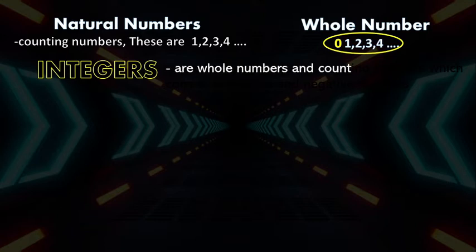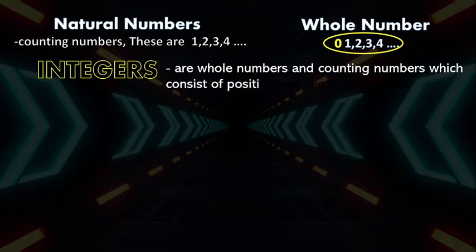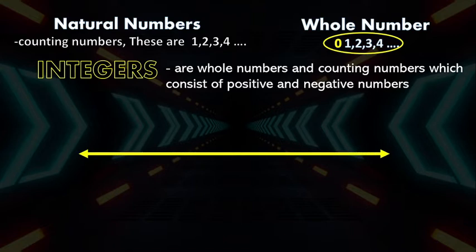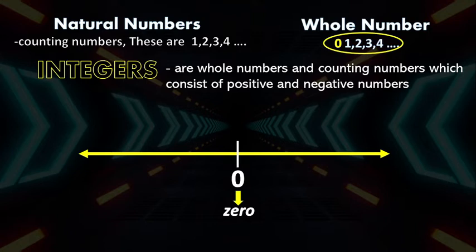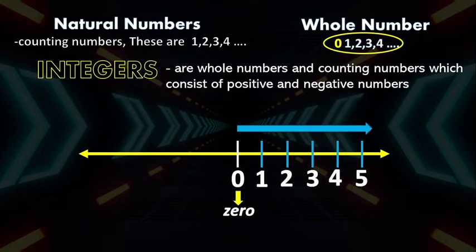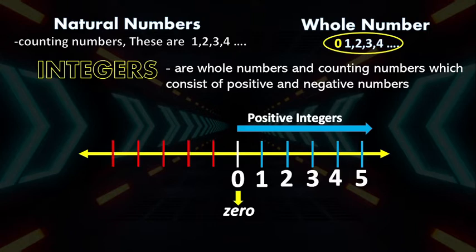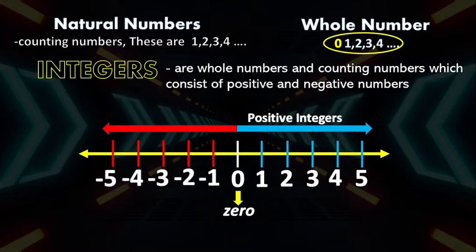Integers are whole numbers and counting numbers which consist of positive and negative numbers. Let us observe this number line. This number line is divided into right and left parts by the number zero. Zero is an integer that is neither negative nor positive. The numbers on the right side of zero are the positive integers. These positive integers can be written with or without a positive sign. While the numbers on the left side of zero are negative integers, which must be written with a negative sign.